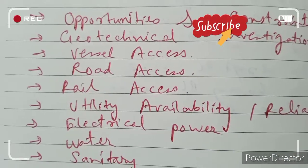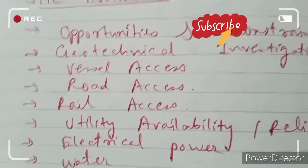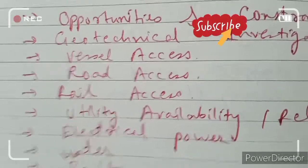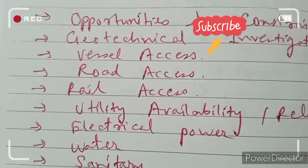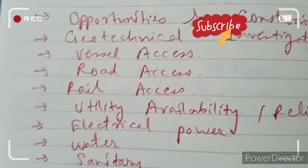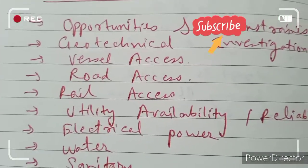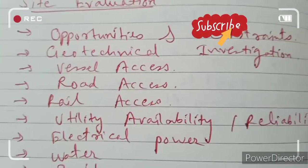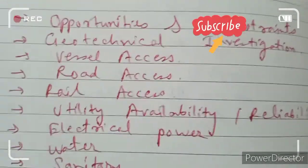The fifth factor is rail access. The port should be developed in such a way that rail can easily access it for movement of cargo containers, liquid terminals, and other freight types.